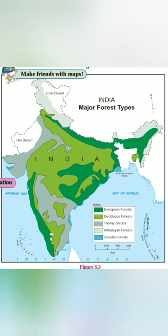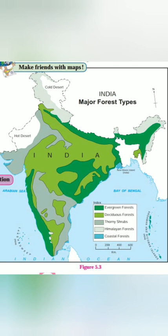In the mixed foothill forests, the proportion of sal trees is higher. Sal wood is very good for making furniture and for building purposes. It is next to teak in quality — teak is the best and then sal. Sal is grown on a large scale in the foothills of the Himalayas. In this way, we have seen India and its vegetation.